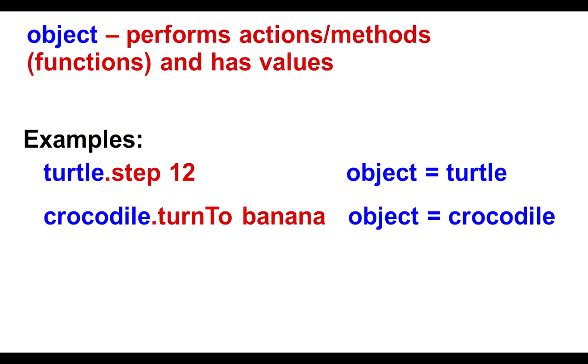An object is a performer in a command. It performs methods. In this case we have a turtle that's stepping. Here we have a crocodile that's turning. The object is followed by a period and then the method name. Object period method name.